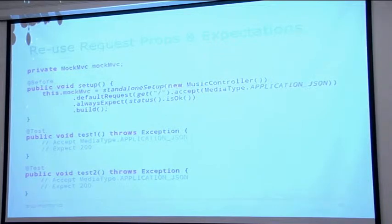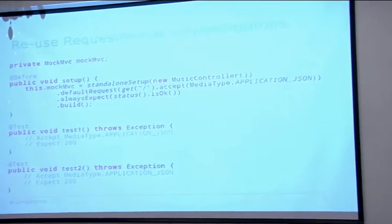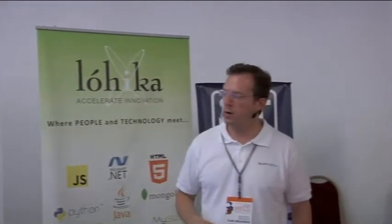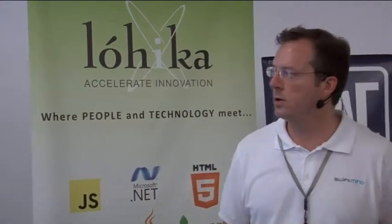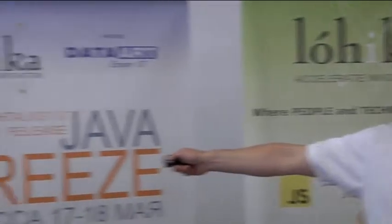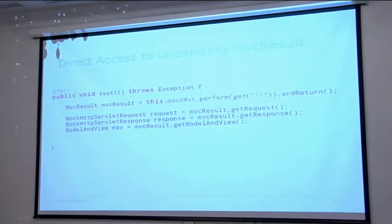To reuse configuration and avoid violating the DRY principle, in your setup method you can configure 'defaultRequest' and 'alwaysExpect' settings that apply to all tests, and then override those in individual test methods as needed. There are also times when you need access to the underlying MVC result directly — getting hold of the request, response, and the model view. For example, if you're testing asynchronous execution support, you want to get hold of the MVC result and make sure code is invoked asynchronously.